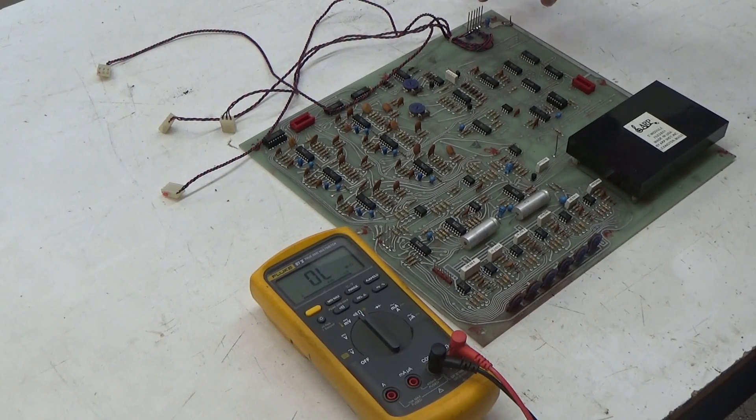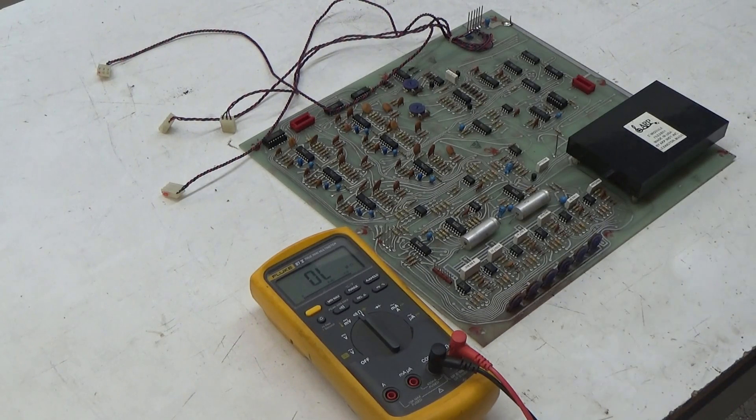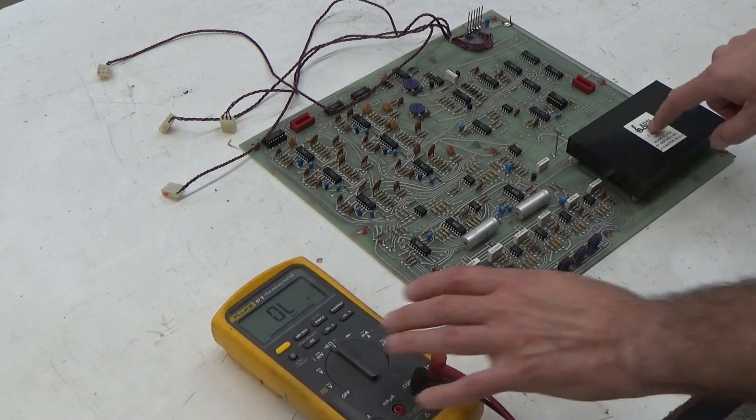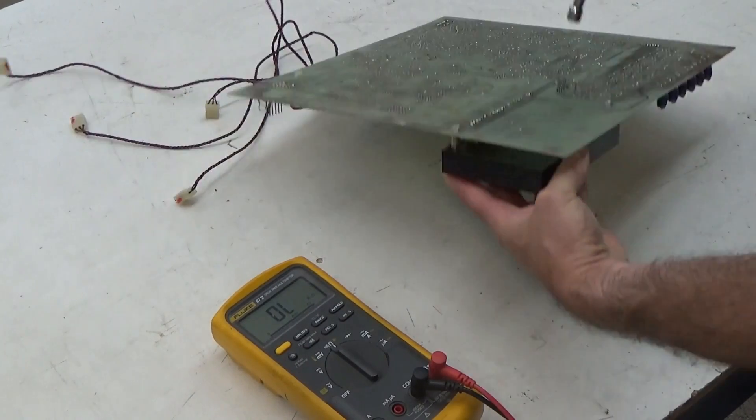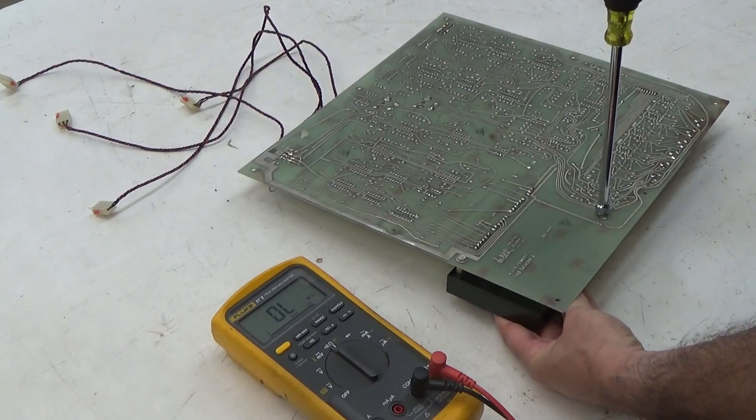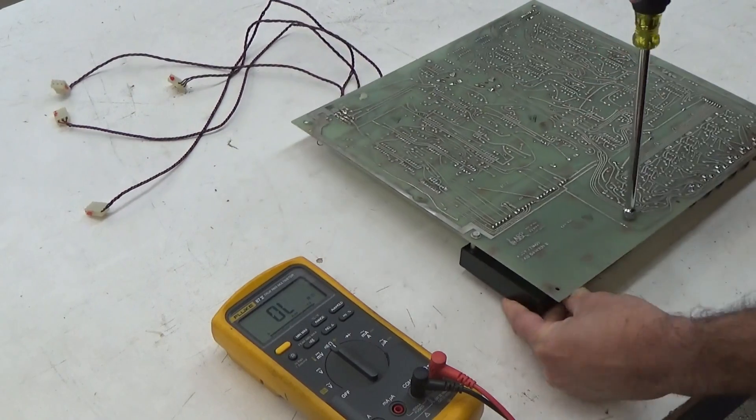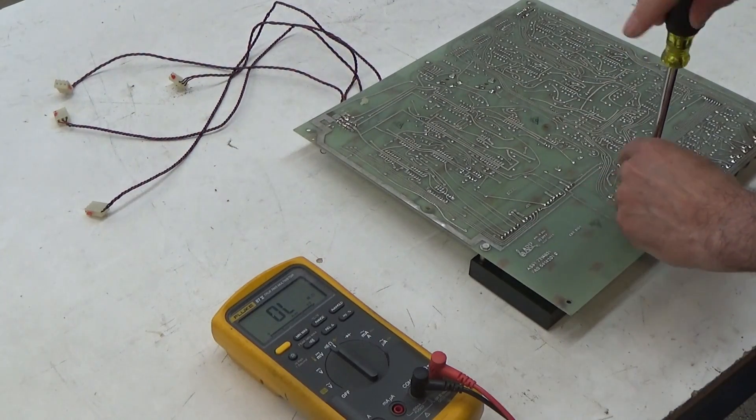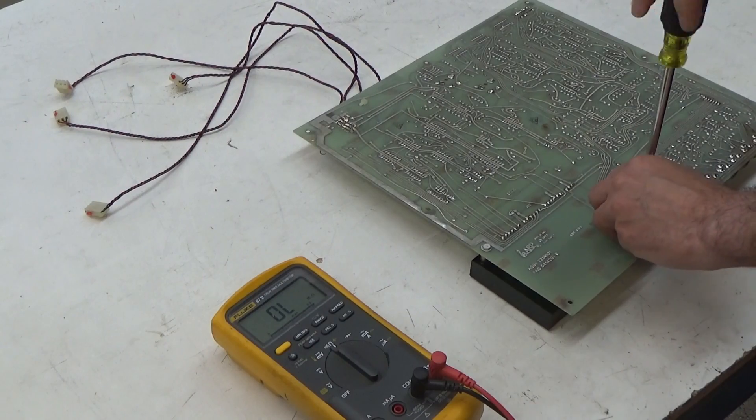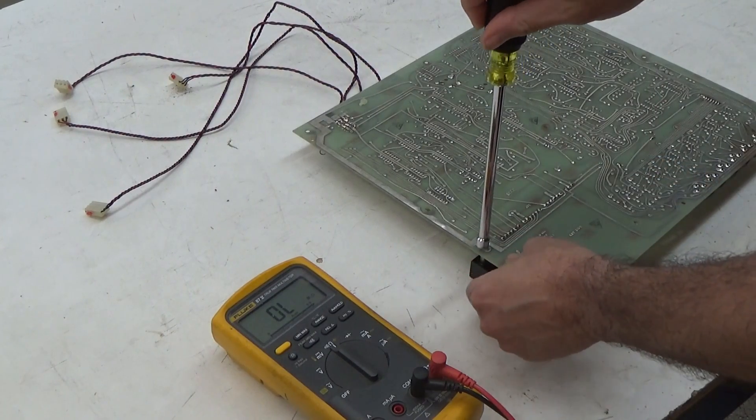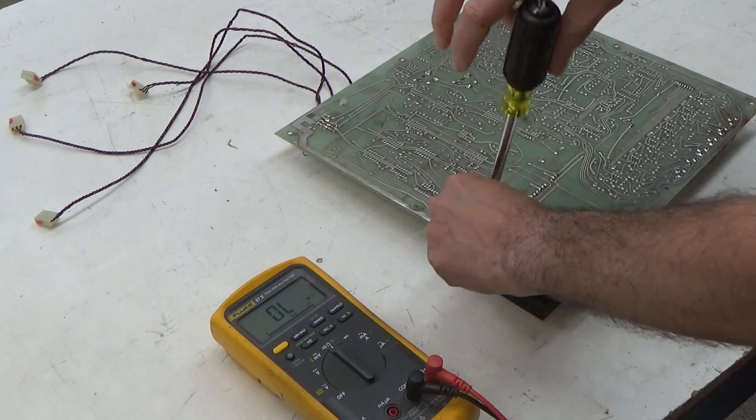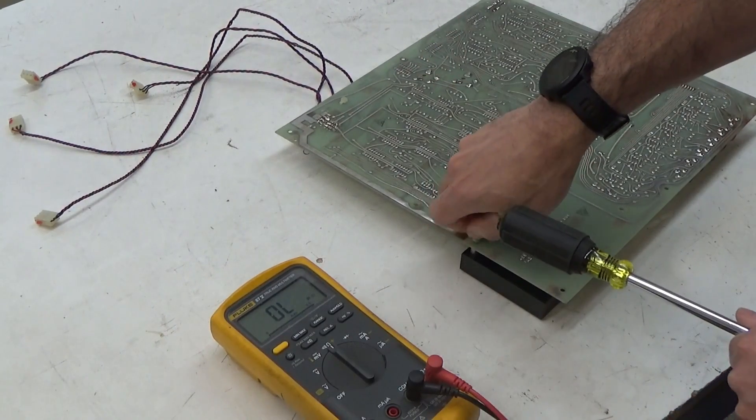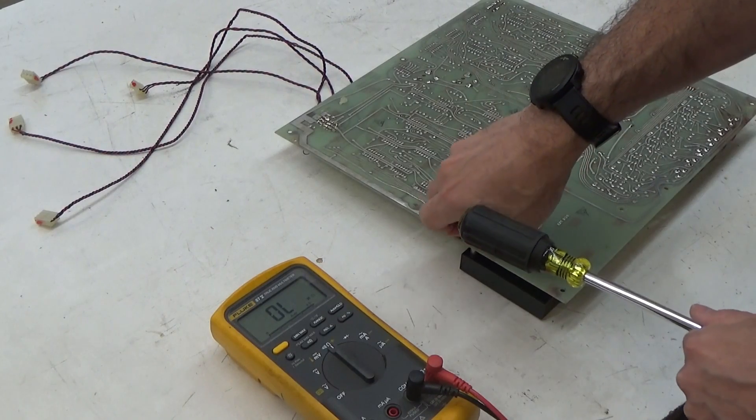It'll pull that 15 volt rail down to ground and nothing in the synthesizer will work correctly. So we can see if it's in this module by actually removing this module and see if the short circuit goes away. If it's anywhere but this module, we can fix it. If it's in this module, then the guitar interface on this ARP avatar will be irreparably broken.